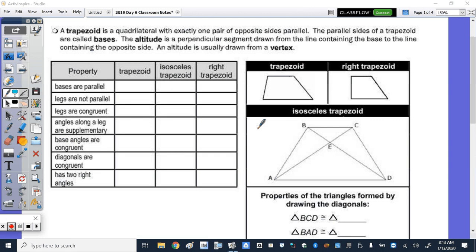The last member of our quadrilateral family that you're going to study this year is the trapezoid. A trapezoid is a quadrilateral with exactly one pair of opposite sides parallel. The parallel sides of a trapezoid are called bases and the altitude is a perpendicular segment drawn from the line containing the base to the line containing the opposite side. An altitude is usually drawn from a vertex.